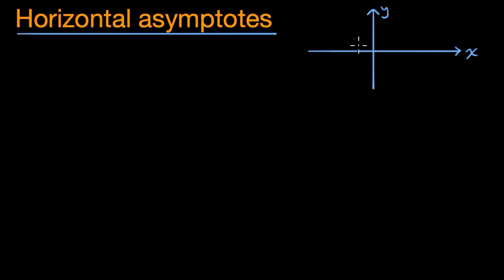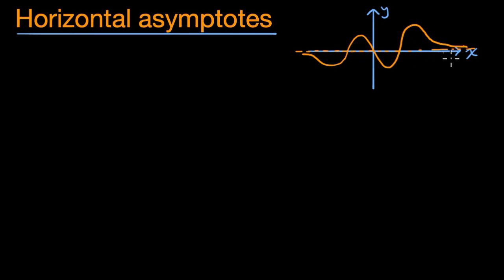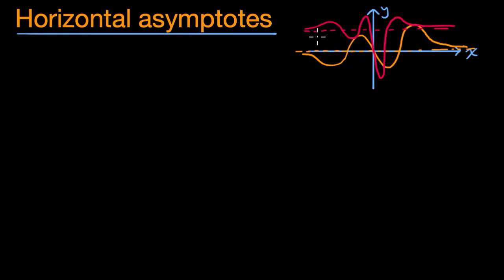It might do all sorts of things when the x values are small, but as they get large, it might approach some value. And similarly, as they get very negative, it might approach a value there. Our horizontal asymptote, at least the way I drew it, looks like it is the x-axis, but it isn't always the x-axis. You might have a function with a horizontal asymptote at some other value — it might do all sorts of things, but as you get to very large or very negative x's, you approach that horizontal line, never quite getting there, and that's why we call it an asymptote.